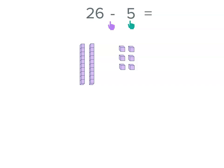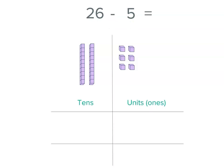And then we're going to subtract. We're going to subtract 5. But we want to start with 26. So let's have a look. We've got tens and units, or ones. And you can see the models just at the top there. Now, we're subtracting 5.